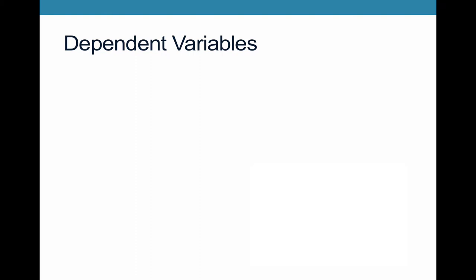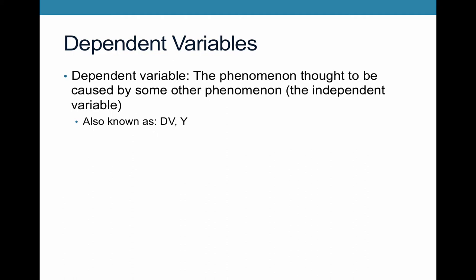Using this example, we're going to talk through what both dependent and independent variables are. The dependent variable is the phenomenon thought to be caused by some other phenomenon — the independent variable. We also refer to the dependent variable as DV, or simply Y. This is the outcome of our study — the factor whose causes we want to investigate.